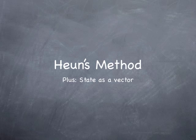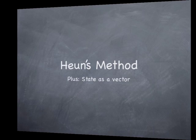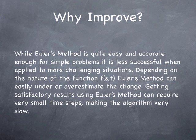Okay, it's time for another podcast. This week we're going to be talking about Heun's method, plus keeping track of state as a vector. One question is, what's wrong with Euler's method? We worked it out, it worked pretty well. Why do we need a new one?